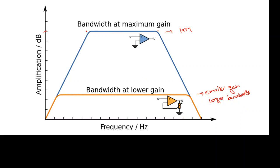When the gain is larger, the bandwidth is very small. Though the gain of the operational amplifier is high, the bandwidth is small — which means the output will be an exact duplicate of the input only over a very small range of frequencies. Outside that range the output will be a distorted version of the input.